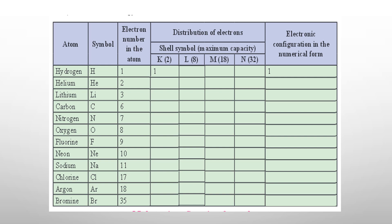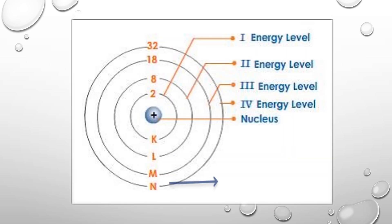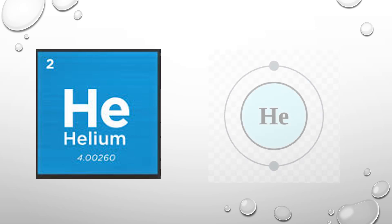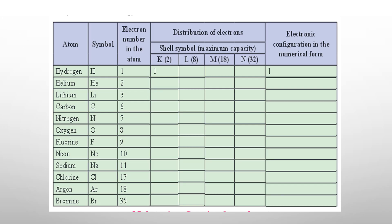The second example is helium, which has atomic number two. We look at the first shell, which has a capacity of two. You directly put two electrons in the K shell. The shell has now become complete because the capacity is two and it has two electrons — so it's full and stable. I write two in the K column, so the electronic configuration of helium is 2.